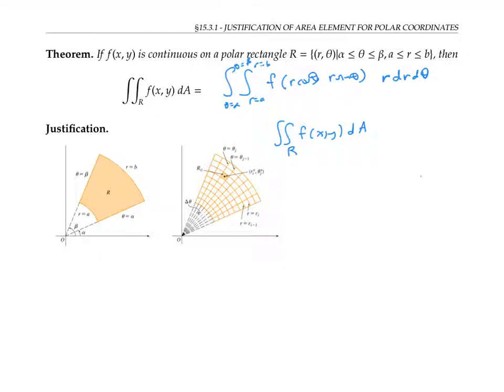We divide the region that we're integrating over into a bunch of little polar rectangles by drawing a bunch of rays out from the origin that are spaced apart by an angle of Δθ, and we draw a bunch of concentric circles whose radii differ by Δr.